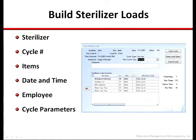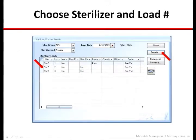When a sterilizer load is built, all of the items on the cart are scanned and their unique identification is preserved. The system will ensure items in the load are compatible with the type of sterilizer, will provide guidance on the selection of the cycle, and document the employee ID for increased accountability. The system will also prompt for the use of BI-PCDs based on the load contents and policies.